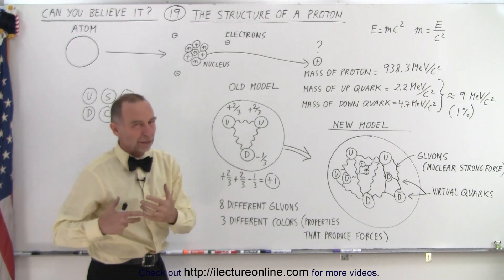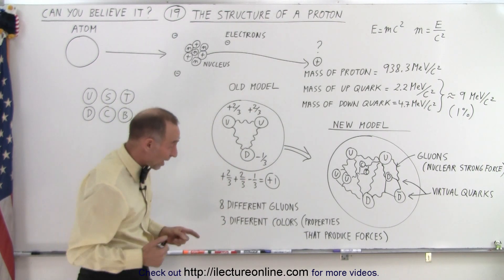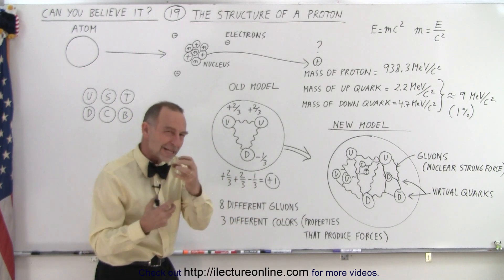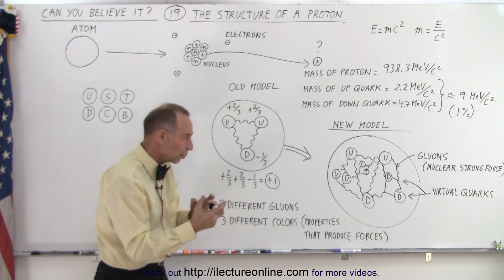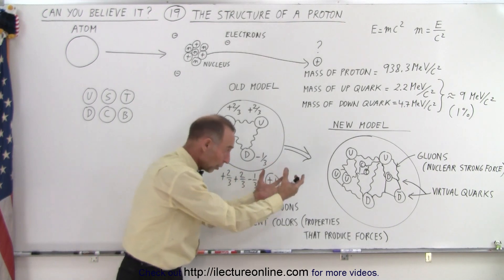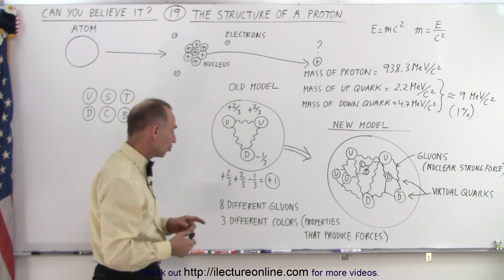Now, the reason why we call them colors is because it's hard to keep track of things. But the colors represent properties that produce forces. So, there's three different kinds of forces acting between the gluons, or that the gluons utilize to produce the nuclear strong force.